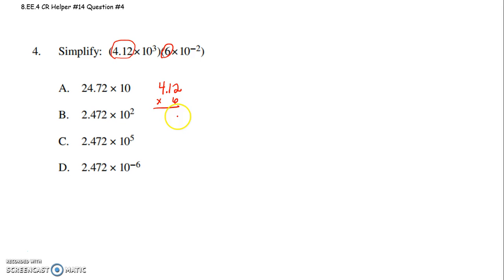6 times 2 is 12. Put down a 2, carry a 1. 6 times 1 is 6, and one more is 7. 6 times 4 is 24. So this is obviously 24.72. Move that decimal point over two places, so in the final answer we move it over two places.